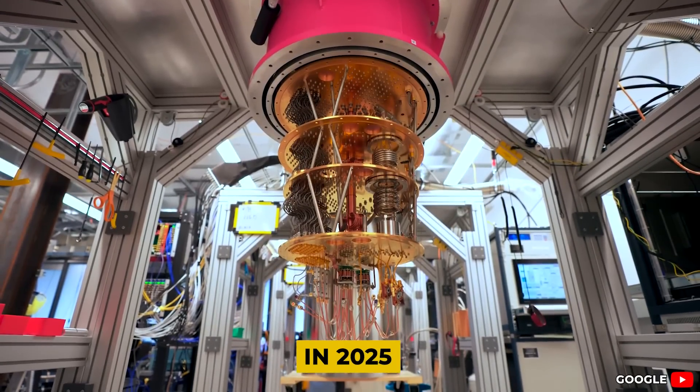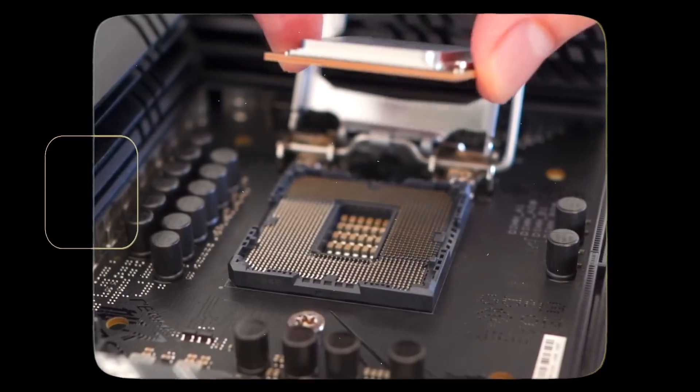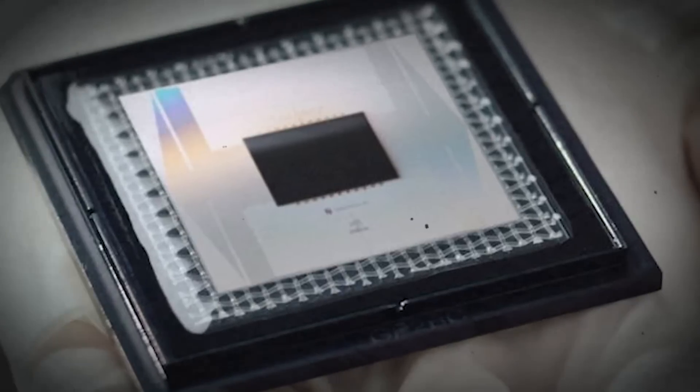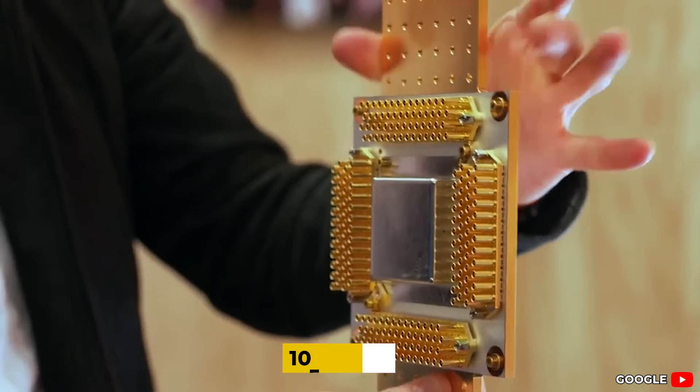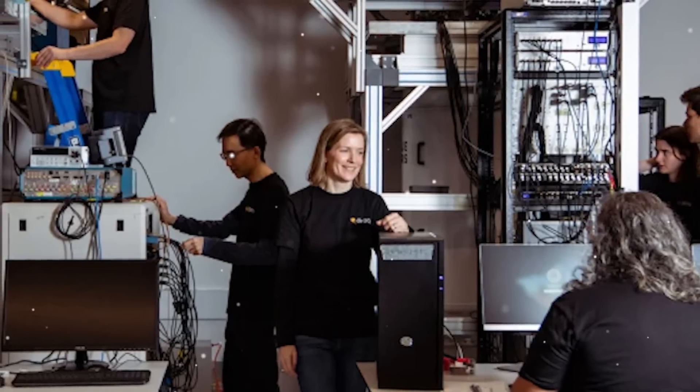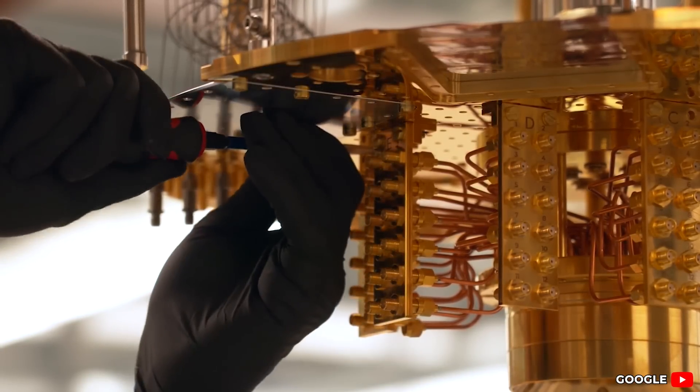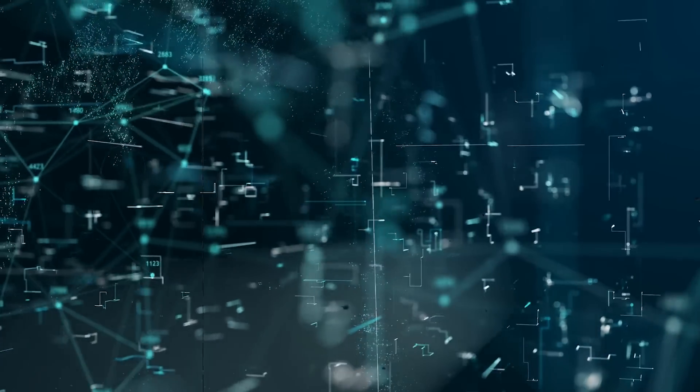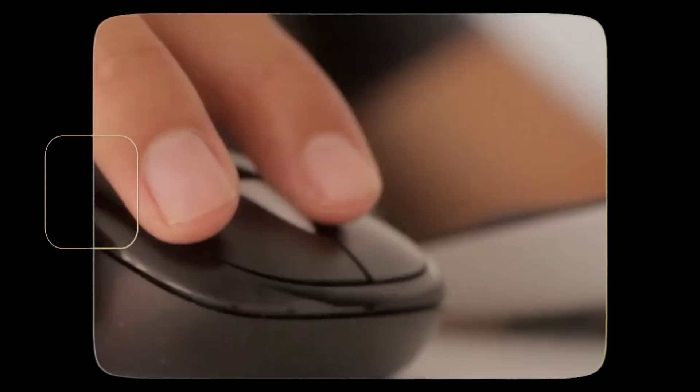In 2025, Google's quantum team decided to raise the stakes. After years of fine-tuning their Willow processor, they introduced something new into the mix. The Willow processor, already a significant leap with its 105 qubits, was now working hand-in-hand with an AI model they called AlphaQubit. Together, this duo wasn't built to break speed records. Their goal was to handle errors, spot hidden patterns, and start answering questions classical computers couldn't even phrase properly.